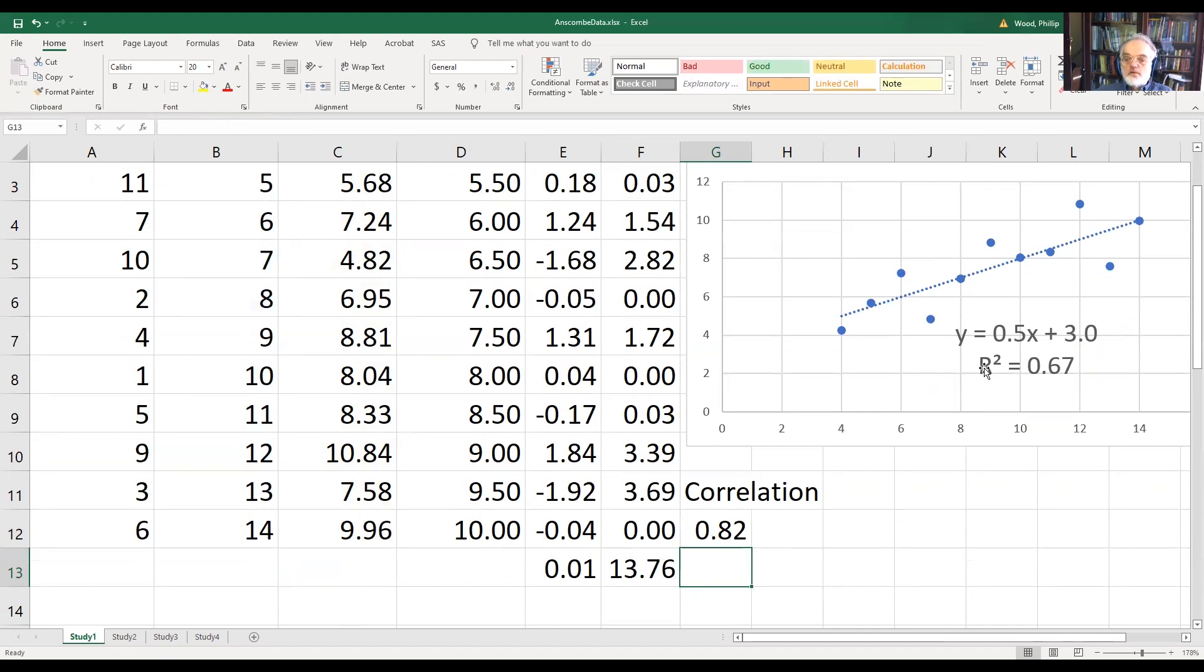I said before that this squared correlation is the square of the correlation coefficient. So let's test that. Let's say I'm going to take this value and again square that. And lo and behold, we also get 0.67.